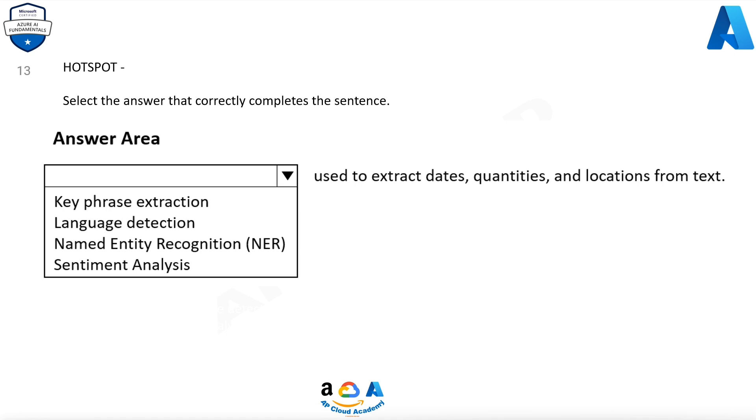Select the answer that correctly completes the sentence. Answer area options: Key face extraction, Language detection, Named entity recognition (NER), Sentiment analysis — used to extract dates, quantities, and locations from text.